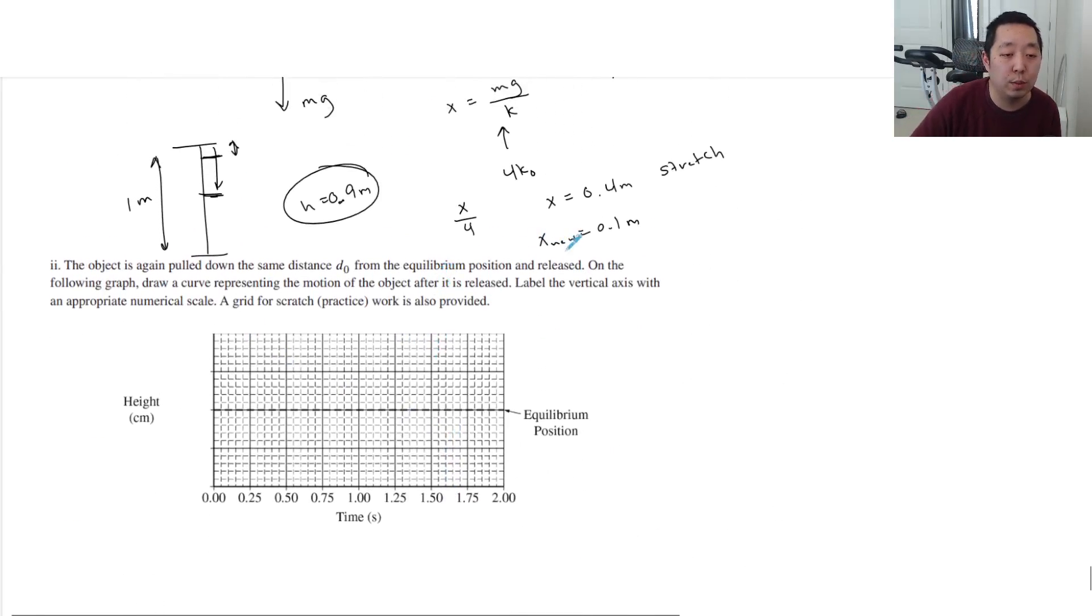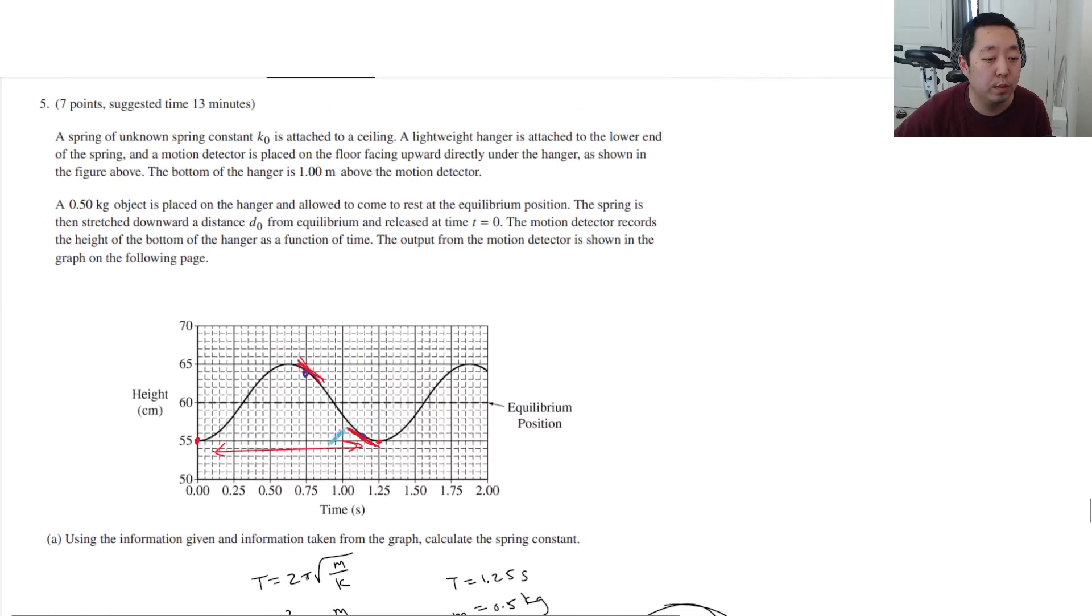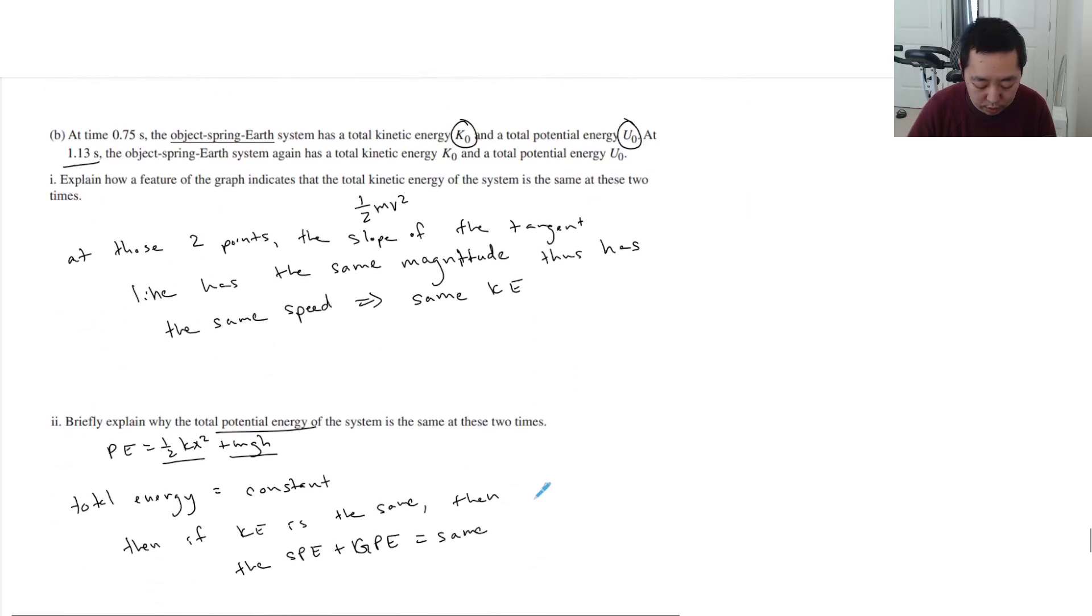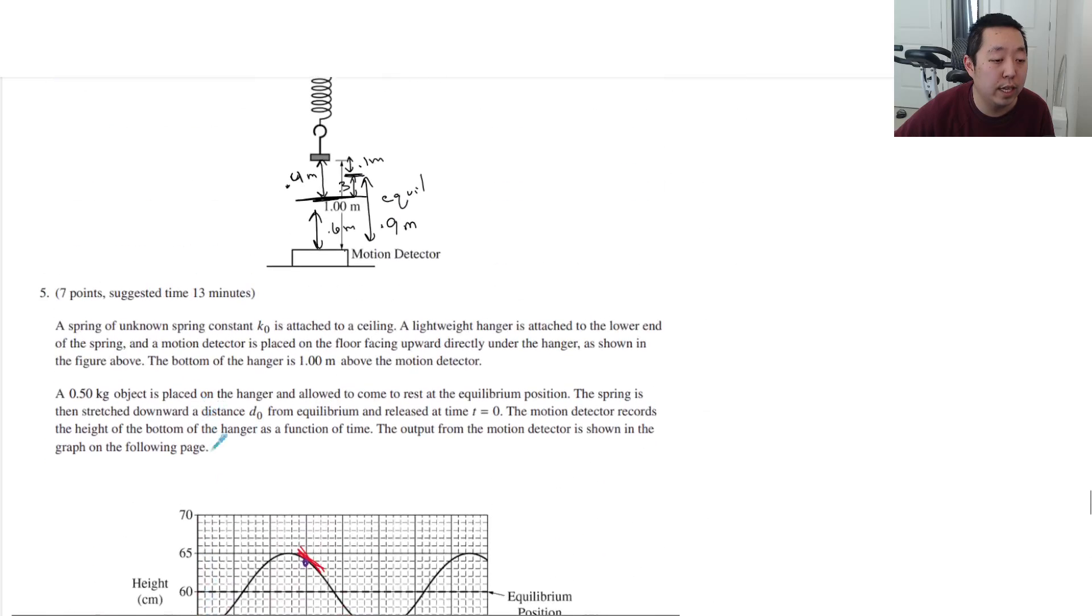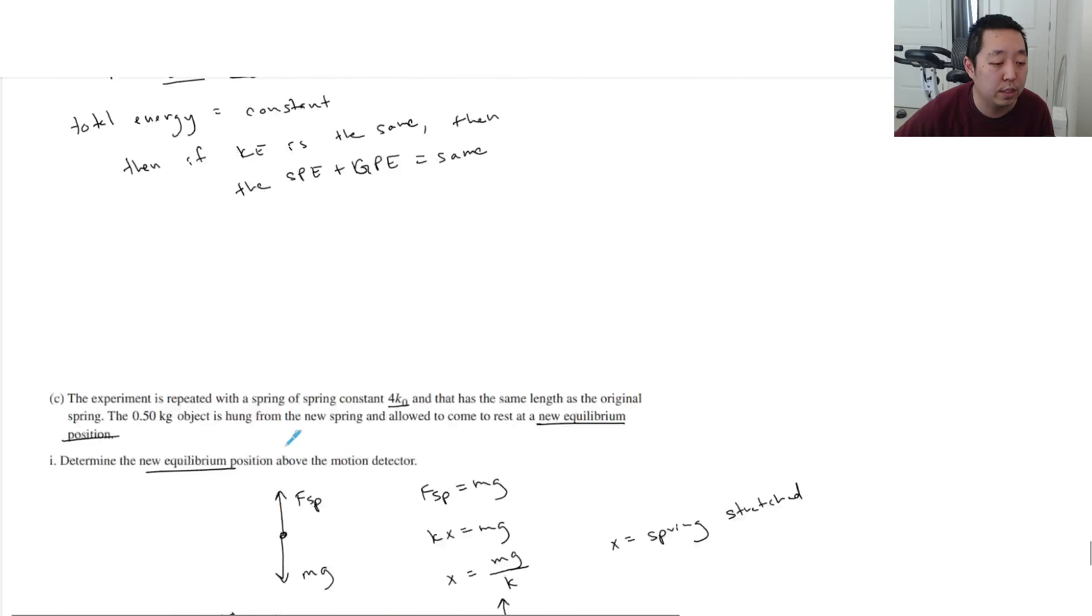Pulled down the same distance D zero from the equilibrium position, released. Draw a curve representing the motion of the object after it was released, label the vertical axis with appropriate numerical scale. This is a little bit tricky. So the period is clearly going to change. If I'm going to make this four times as much, then the period is going to drop by a factor of two. So the period is going to reduce. What was the period before? The period before was 1.25. So 1.25 divided by two, the new period is 0.625. And then we pull it the same distance D zero. So the equilibrium position is 0.9 meters. And then we're pulling it down. How much did we pull it down? About five centimeters. I think they did centimeters. So we got to put this as 90 centimeters.